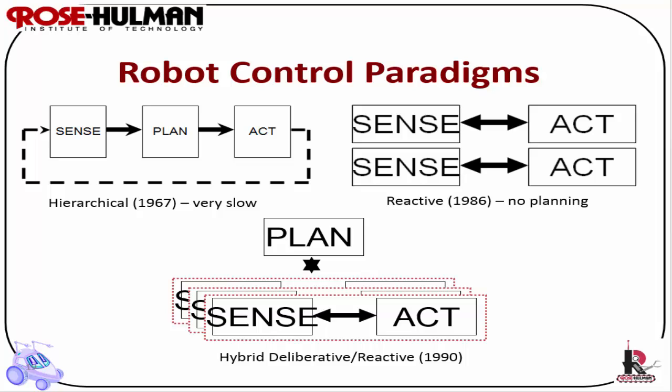Hybrid — deliberative and reactive together — creates the hybrid paradigm. The plan is decomposed into tasks or sub-tasks that the robot executes via the reactive paradigm, giving the best of both worlds: planning on top of the quick sensing and acting of reactive control.